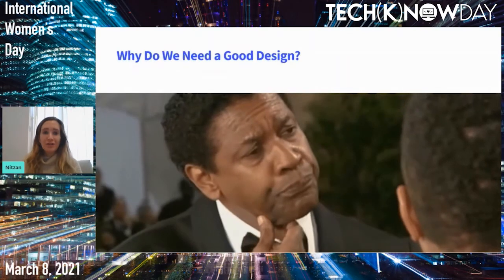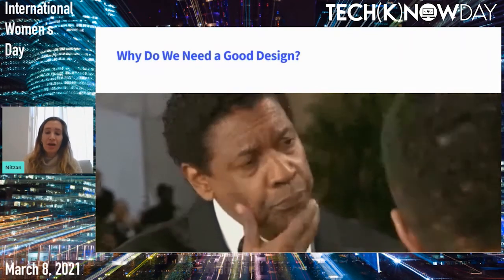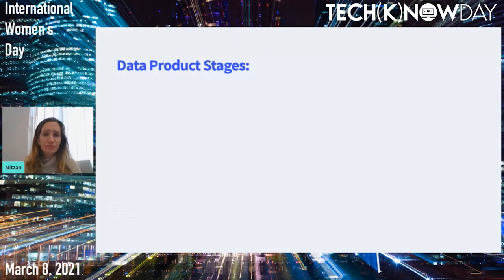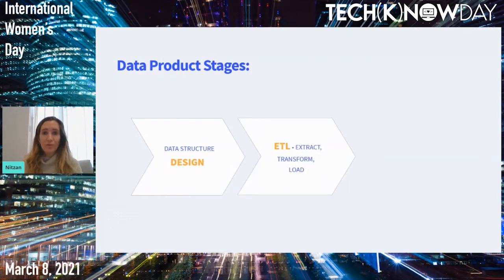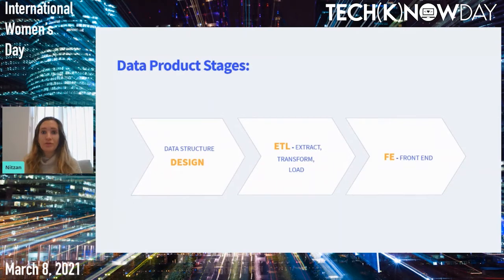So why do we need a good design? Every data model, every data product goes through these following stages. The first one is the design, which we are going to cover today. The second one is the ETL — the extract, transform, and load — meaning taking raw data and converting it to aggregated tables according to the design done in the first phase by creating a data pipeline. These aggregated tables are then converted into a front-end view where users will be able to see the data and the insights they are looking for.